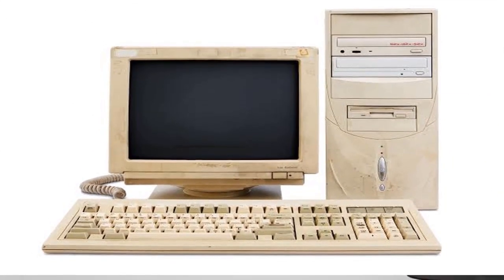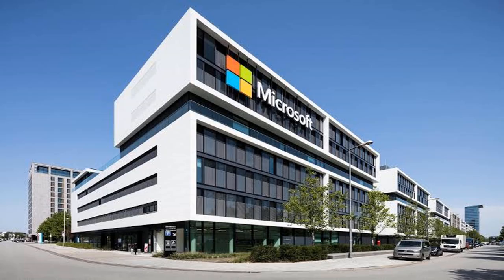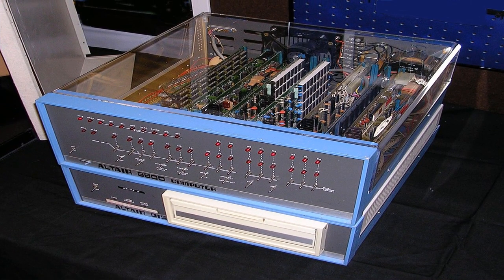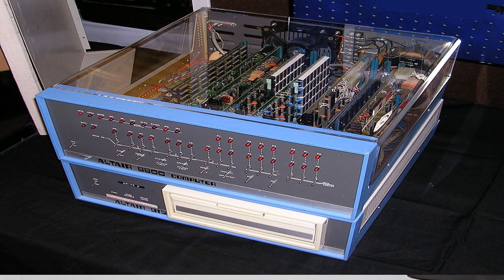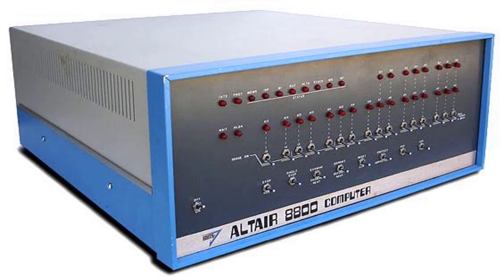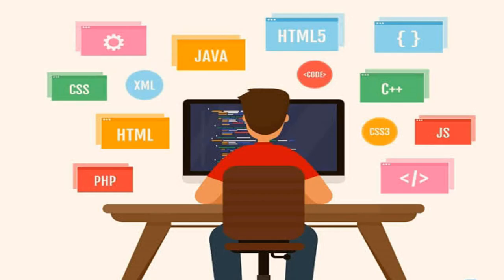Part 3: The Rise of Personal Computers. The 1970s saw the advent of the personal computer, with companies such as Apple and Microsoft leading the way. The first personal computer was the Altair 8800, released in 1975 by a company called Altair. This machine was marketed as a kit that users could assemble themselves, allowing hobbyists and enthusiasts to experiment with programming and computing at home.